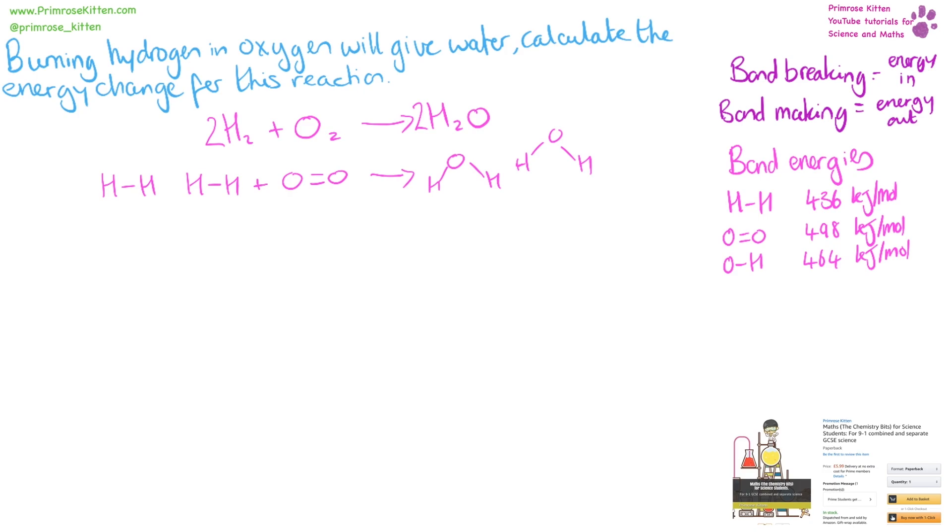Next we're going to list the type of bonds that we have and the number. So we have hydrogen-hydrogen bonds, and we have one, two of those. We have an oxygen-oxygen double bond, and we just have one double bond in there. We have oxygen-hydrogen bonds, and we have one, two, three, four of those.